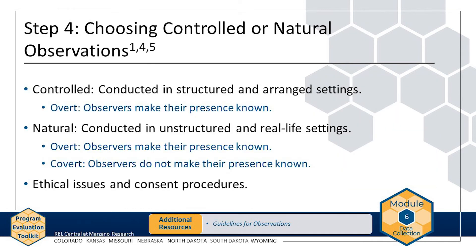Next, decide whether your observations will be controlled or natural. Controlled observations are conducted in structured and arranged settings and are usually overt, meaning that observers make their presence known. For example, you might invite a group of children into a room arranged with toys and then observe their interactions. Natural observations, on the other hand, are conducted in unstructured, real-life settings. They can be overt or covert, meaning that observers either let participants know they are being observed or inconspicuously remain in the environment. For example, you might observe children during recess for bullying behaviors.